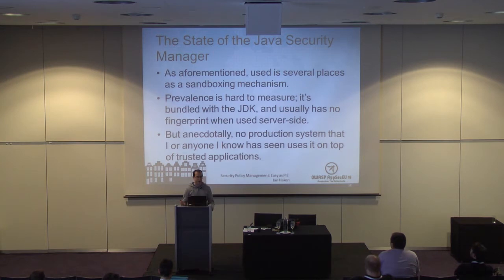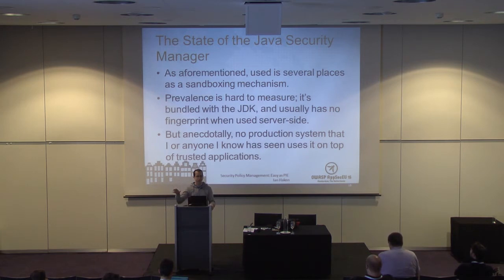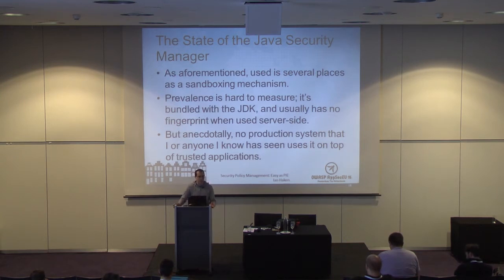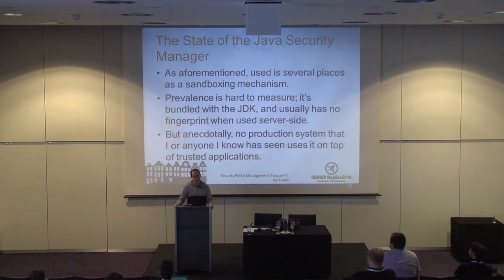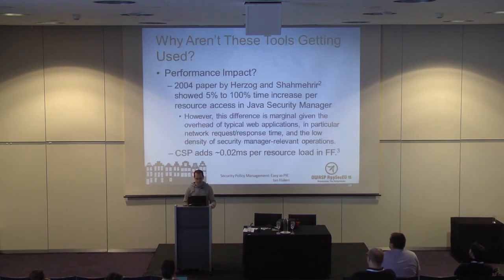The Java Security Manager is used in a lot of places we know about as a sandboxing mechanism, but its prevalence is hard to measure since there's no fingerprint to determine whether sites are using it. I've talked to a lot of people about this and no one I've talked to knows of a case where the Java Security Manager has been used on top of trusted code as a layer of protection. And yet, as in the Struts case, it gives you a great layer of protection whether or not you know about vulnerabilities in the frameworks you're using. So the question is: if these tools are so good, why aren't we using them?